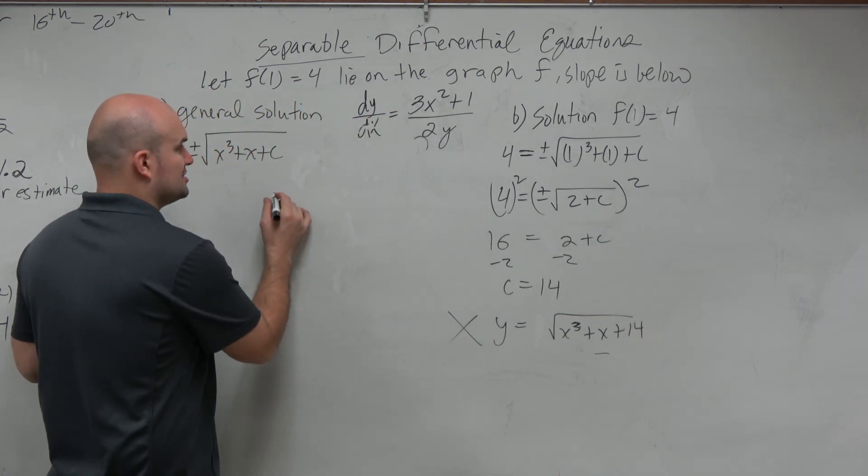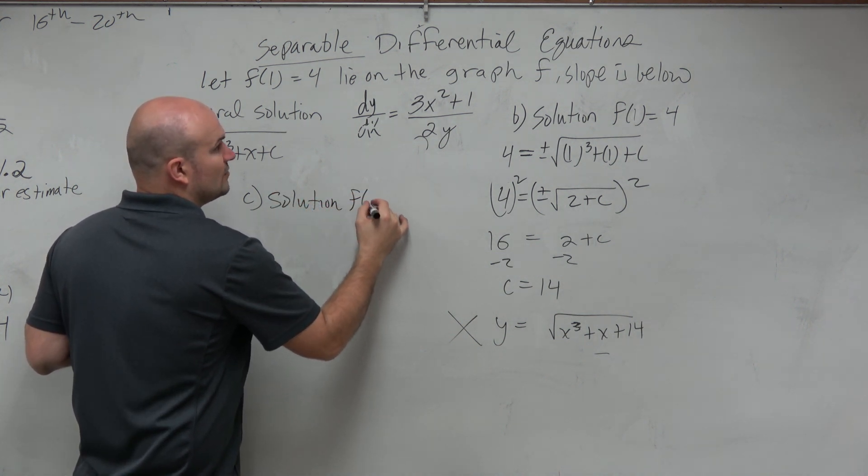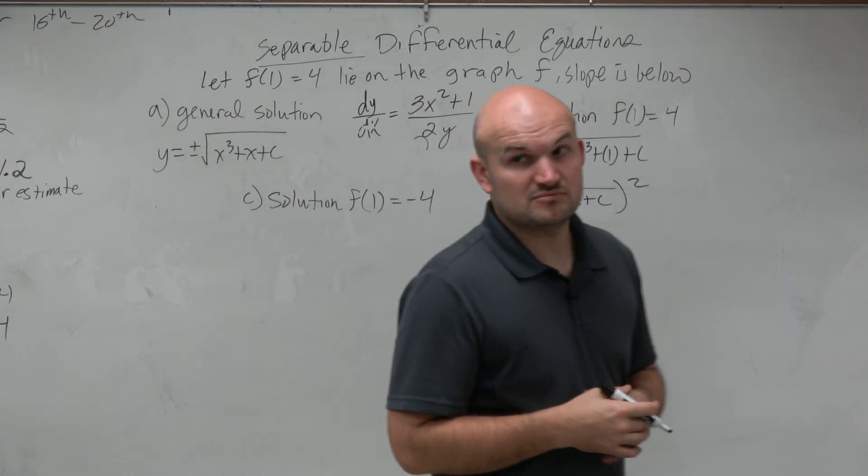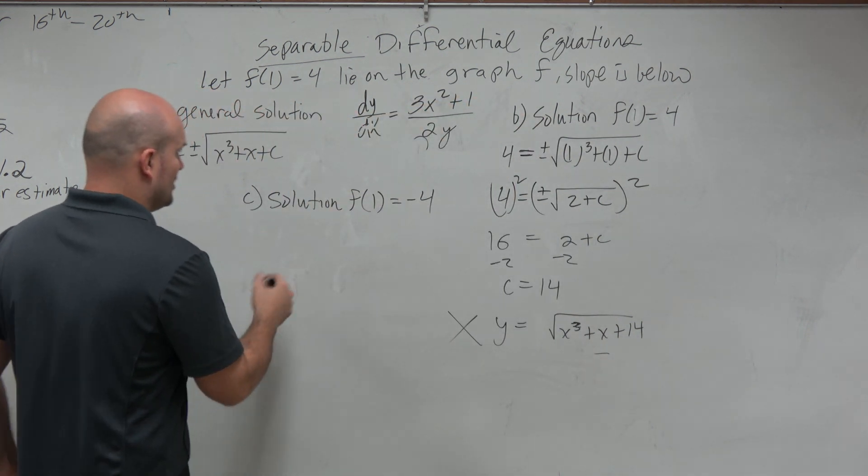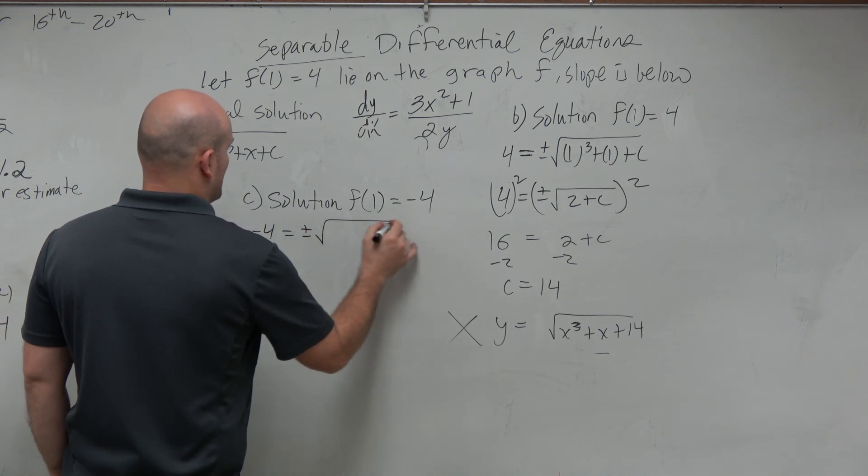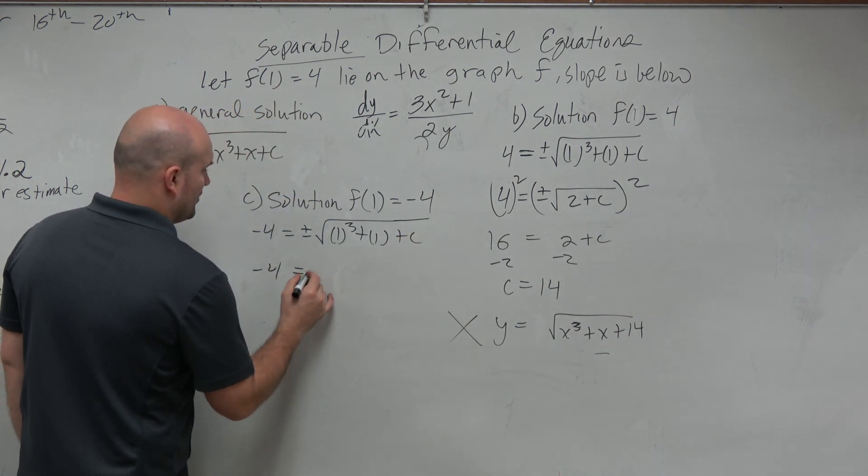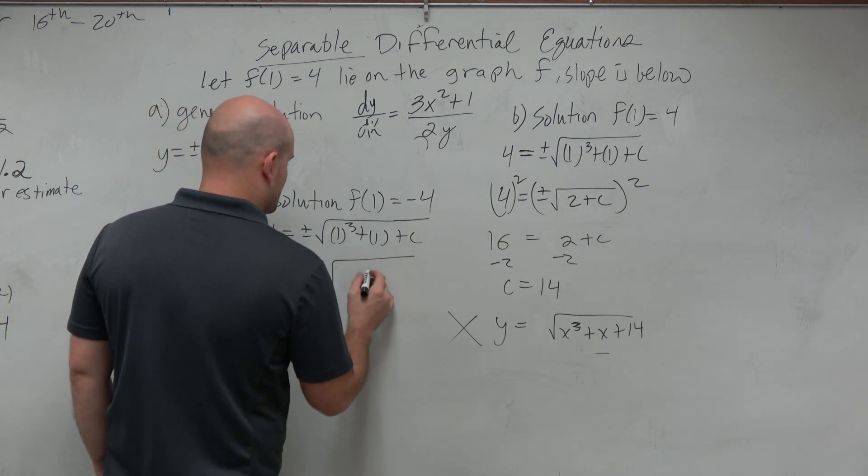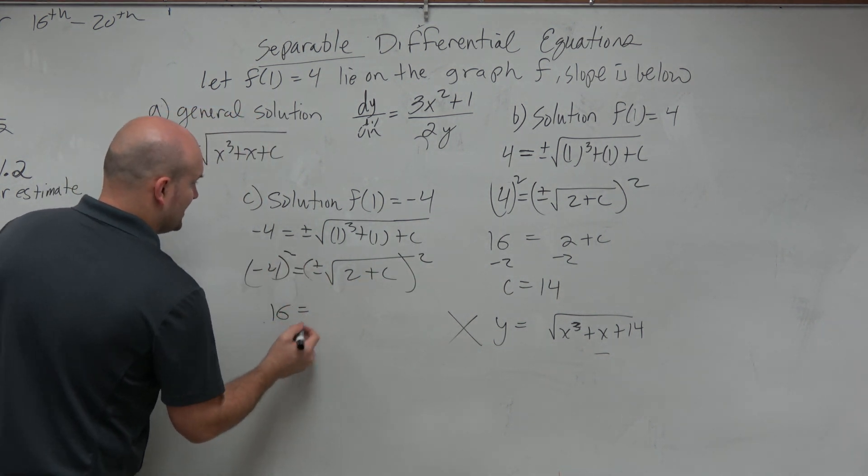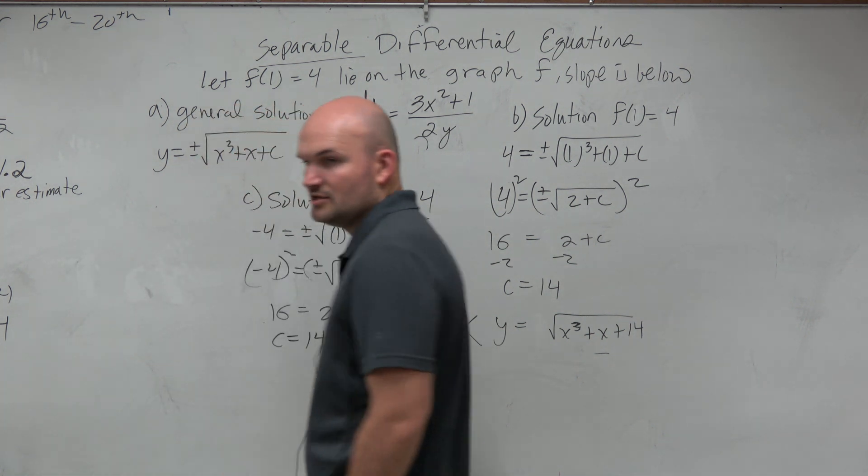Now, let's just play this around one more time. Let's do a c. What if I said the solution was f of 1 equals negative 4? OK? So you do the exact same thing. You're doing all this work. You're going to get negative 4 equals plus or minus square root of 1 cubed plus 1 plus c. Negative 4 equals plus or minus the square root of 2 plus c. You're going to square both sides, you're going to square both sides. 16 equals 2 plus c. c equals 14.